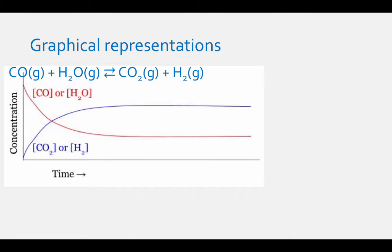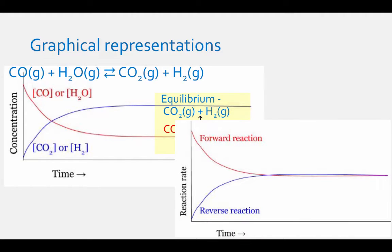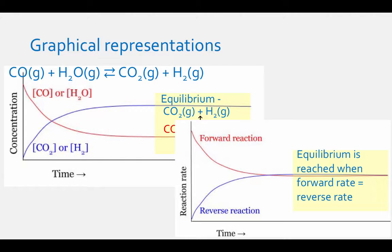As you can see, the concentrations of the reactants decrease and the concentration of the products increase. Equilibrium is reached when the concentration of the reactants and the products are no longer changing. At equilibrium, CO₂ and H₂ are being formed at the same rate as they are reacting to reform CO and H₂O. The reaction rate versus time graph looks like this, and you can see that equilibrium is reached when the forward rate equals the reverse rate of the reaction.